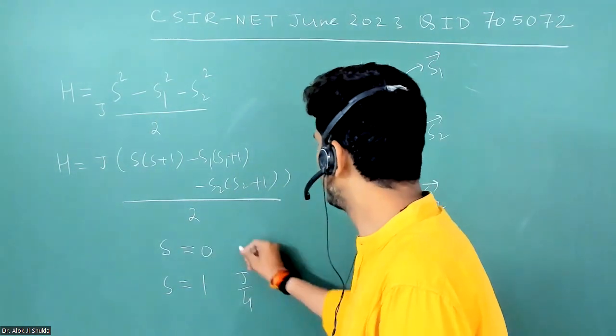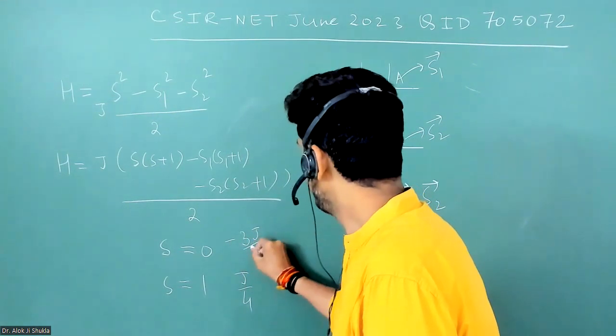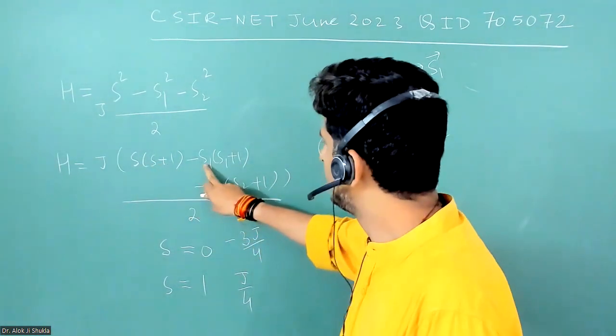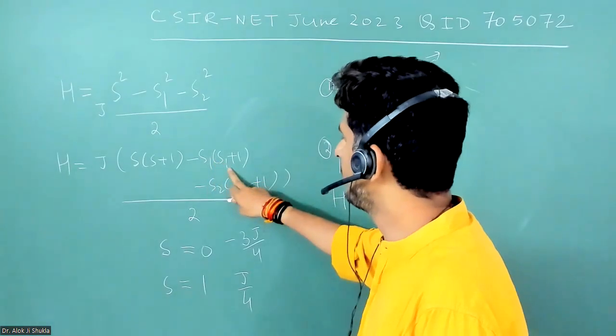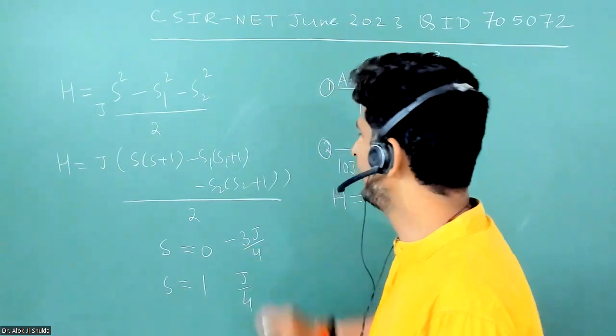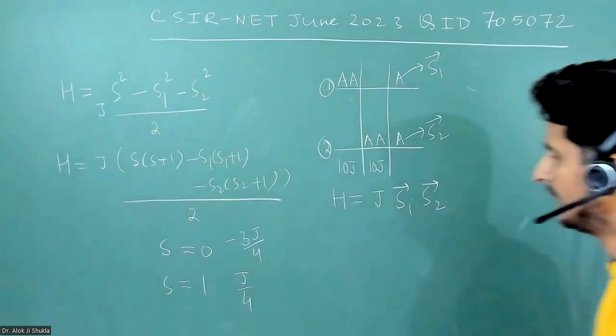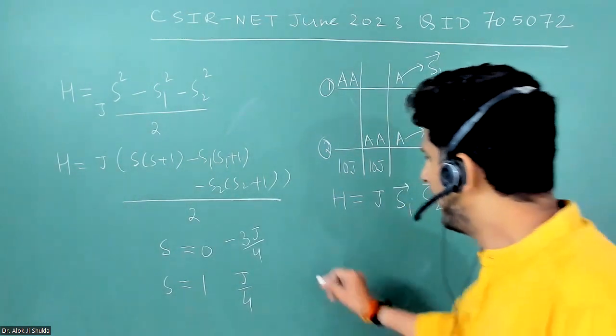And if you put S is equal to zero, you will get it as minus three J by four. So if you put S is equal to zero, this will become zero. This will be half, half plus one, that means three by four. So two times three by four, two and two cancel. So that's why minus three by four J.